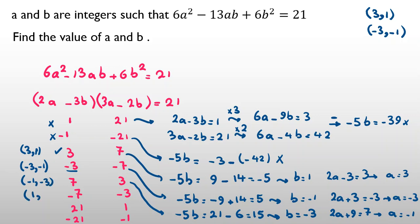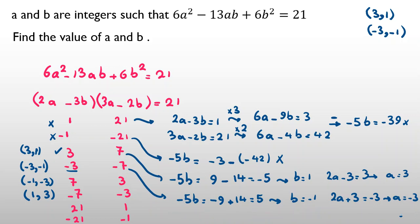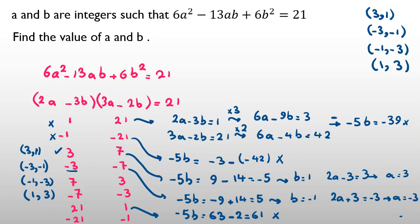By negation, we also get the answer (1, 3). For the case (21, 1): negative 5b equals 3 times 21 minus 2 times 1, which is 63 minus 2 equals 61. Since 61 is not a multiple of 5, this is impossible. So we have found all four integer answers: a and b are (negative 1, negative 3), (negative 3, negative 1), (1, 3), and (3, 1).